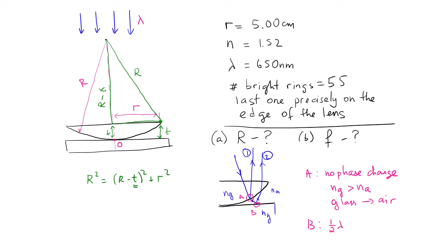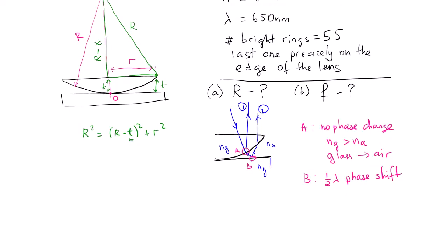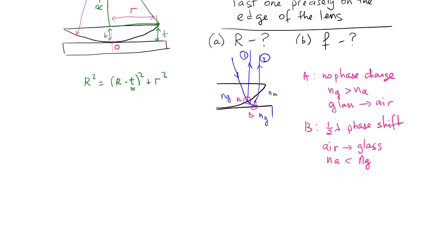there is a half a cycle wave, phase change, which is half a wavelength in phase. So phase shift. And that's because at point B, the rays are going from air to glass. And air has a less index of refraction than glass.